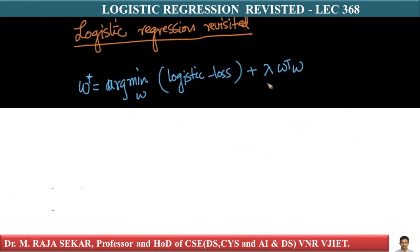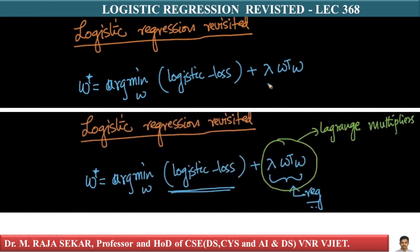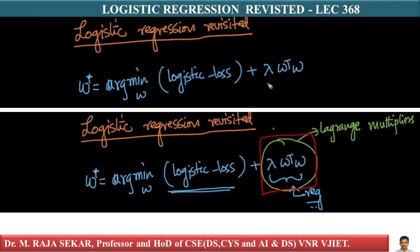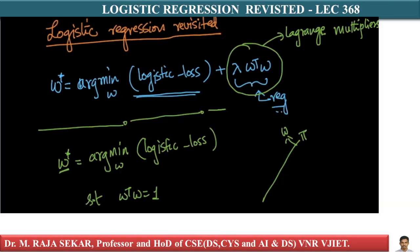I will try to give an interpretation wherein your regularization term lambda times w-transpose-w would be exactly similar to Lagrange multipliers, or the Lagrange concept. Let me try to connect these two dots on how regularization is similar to Lagrange multipliers in some ways.